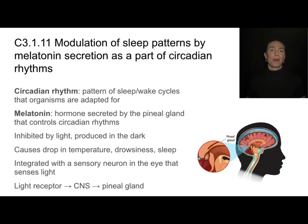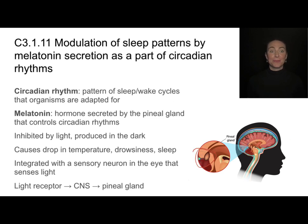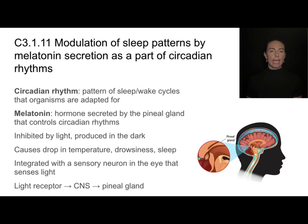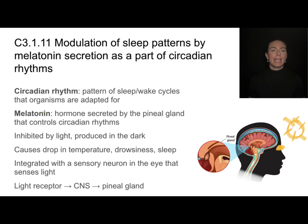A great example of how hormones are used to communicate and integrate several body systems is melatonin. Melatonin is a hormone produced by the pineal gland in our brain. It's a tiny gland that produces a really important hormone, and this melatonin controls the circadian rhythms. Circadian rhythms are that pattern of sleep and wake cycles that organisms are adapted for. Melatonin is inhibited by light, so when a light receptor in our eye senses light, it sends a message to the central nervous system inhibiting the production of melatonin at the pineal gland.